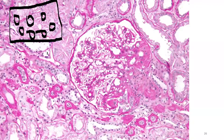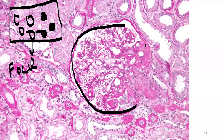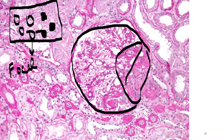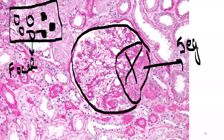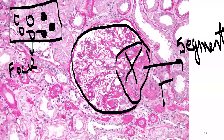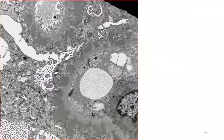This next slide shows focal segmental glomerulosclerosis (FSGS). At high magnification, only some glomeruli are involved (focal), and within a single glomerulus only a segment is involved (segmental). So amongst all glomeruli, some are involved, and even within a single glomerulus only a small part is affected — this is FSGS, focal segmental glomerulosclerosis.